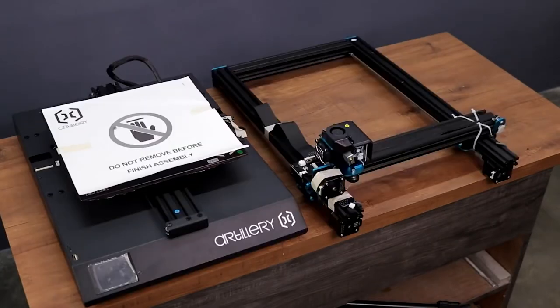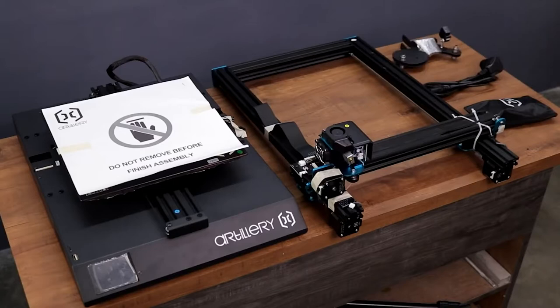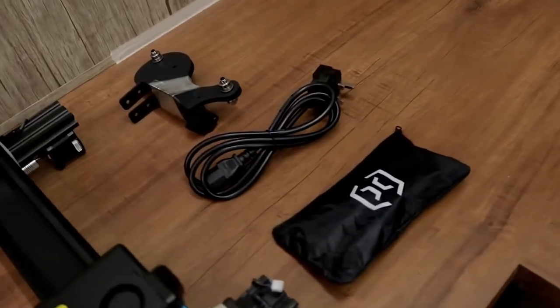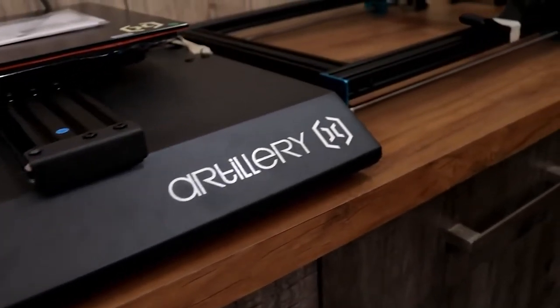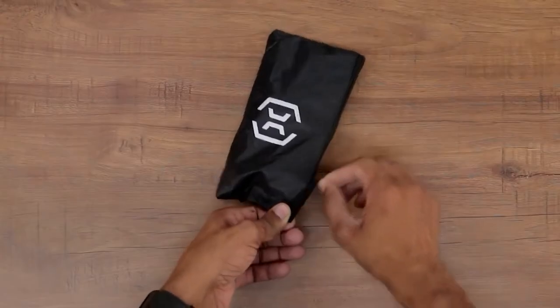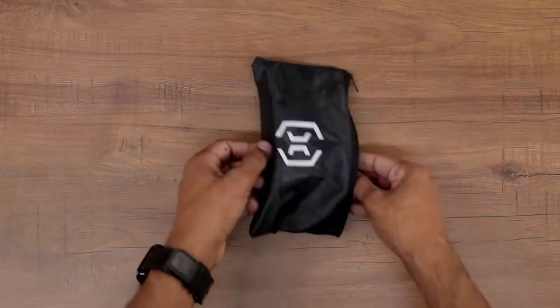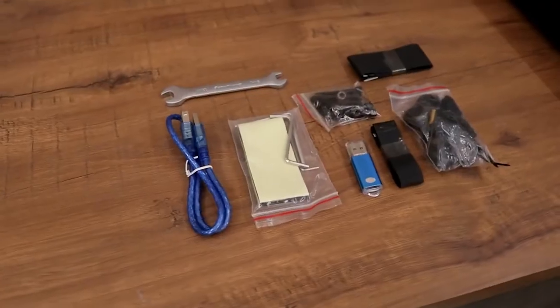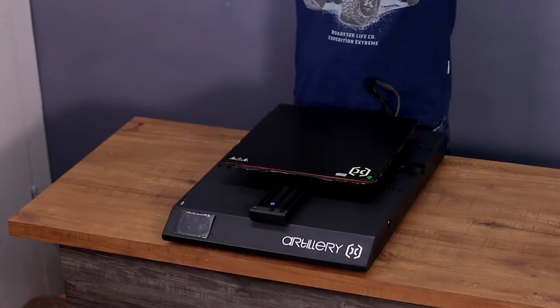All right, so we are done with the unboxing and here are all the items that we got in the box. In this little bag we got some spare parts, accessories, and necessary tools that we need for assembly. And it's time to assemble this printer my brothers, so let's do this.